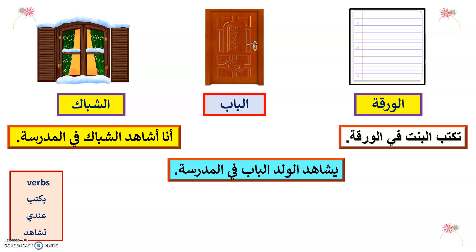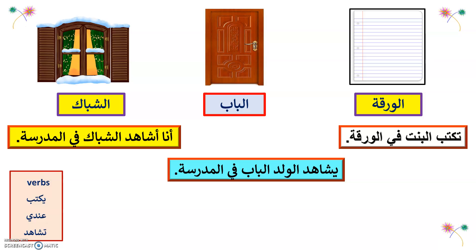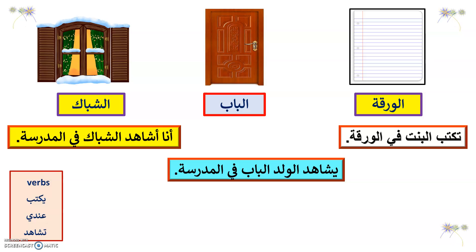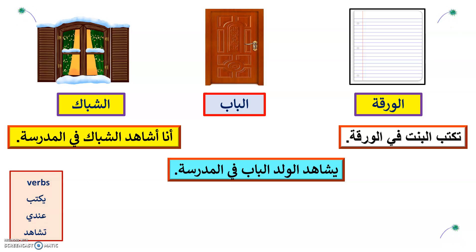You can also use the verb 'to shahid' meaning 'to see.' Ana ushahid — I see. For example: Albint toshahid albab — the girl sees the door. Or: Ana ushahid alshubak — I see the window.